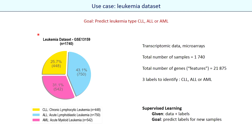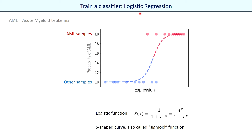Let's return to the leukemia dataset and train some classifiers for leukemia type prediction. The first classifier is logistic regression. The classical logistic regression is designed to classify samples between two groups only, but we can easily extend the method for several groups.